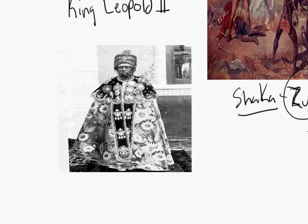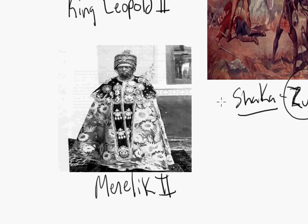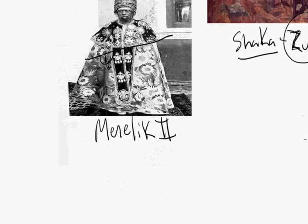Here's another example: Menelik II of Ethiopia. He is known for defeating the Italians — he's the only one who was actually able to resist the Europeans in Africa. He got weapons from the French and the British, so he had guns, and with those guns he was able to defeat the Italians. The Italians were not able to take Ethiopia.